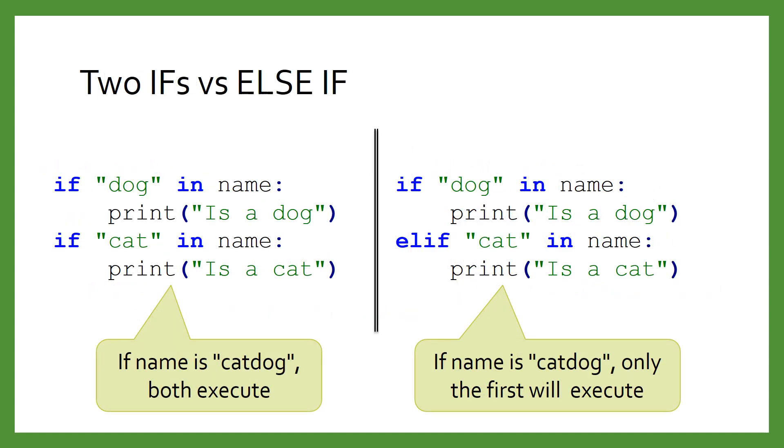The following two pieces of code may look similar, but they are quite different. The code on the left has two if statements, and both will always be evaluated and their body potentially executed. The code on the right has an elif statement, and the second part will only be evaluated if the first part evaluates to false.